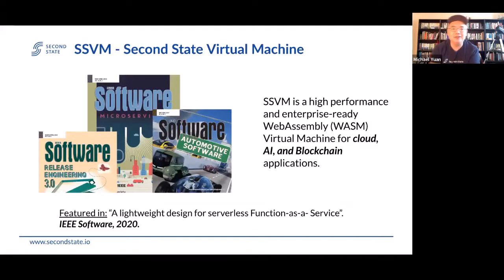This result was written up in an article that is peer reviewed, already accepted for publication in IEEE Software, called 'Lightweight Design for Serverless Function and Service.' It compares the Second State VM against leading serverless containers including Docker, Amazon Firecracker, and Google's gVisor plus Docker. The surprise result is that WebAssembly provides both safety and better performance — you don't have to compromise between safety and developer productivity versus native code performance. You can actually do both. That's a big takeaway from this paper.